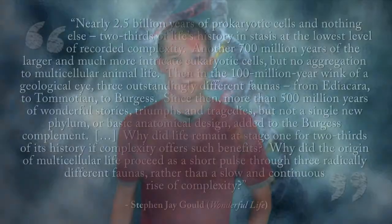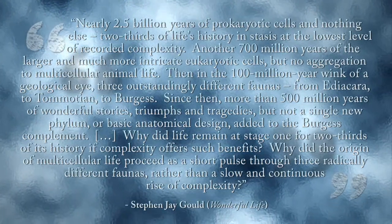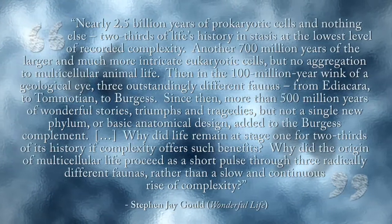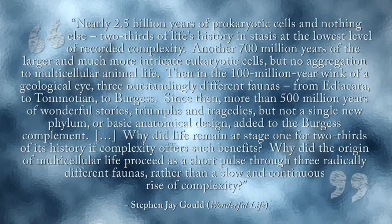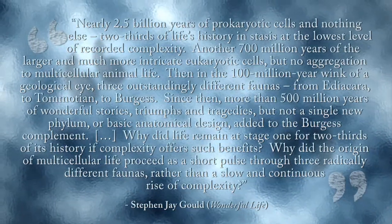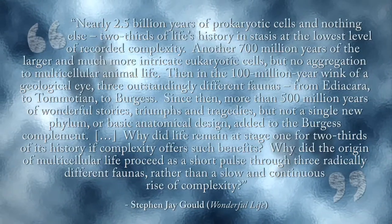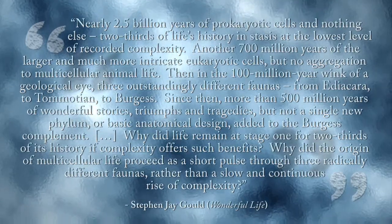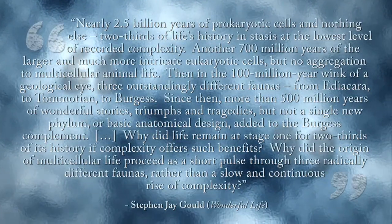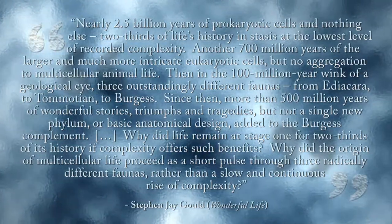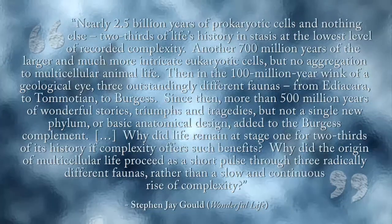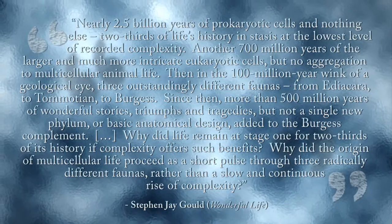This paints a very different picture than the evolutionary tree of life, which generally forms an upside-down cone shape with very few variations at the bottom and many at the top. Co-author of the naturalist theory of punctuated equilibrium, Stephen Gould, summarizes the situation as follows: 'Nearly 2.5 billion years of prokaryotic cells and nothing else — two-thirds of life's history in stasis at the lowest level of recorded complexity. Another 700 million years of the larger and much more intricate eukaryotic cells, but no aggregation to multicellular animal life. Then, in the 100 million year wink of a geological eye, three outstandingly different faunas. Since then, more than 500 million years of wonderful stories, triumphs and tragedies, but not a single new phylum, or basic anatomical design, added to the Burgess complement.'